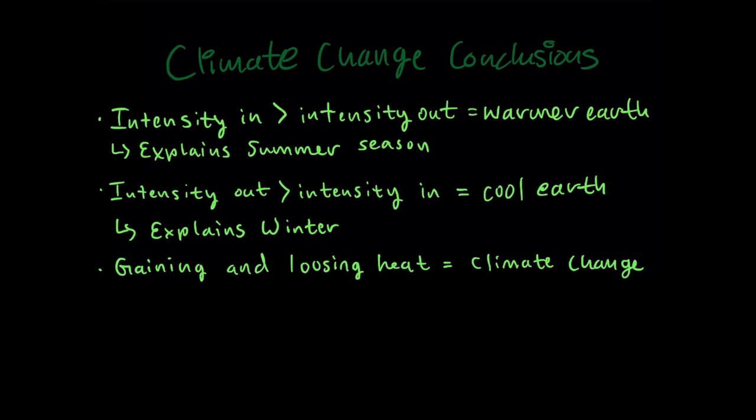When the intensity going in is greater than the intensity going out, the earth will become warmer, which explains the summer season. When the intensity going out is greater than the intensity going in, then it will lead to a cool earth, which explains winter. Gaining and losing heat is what makes climate change. Thank you for watching.